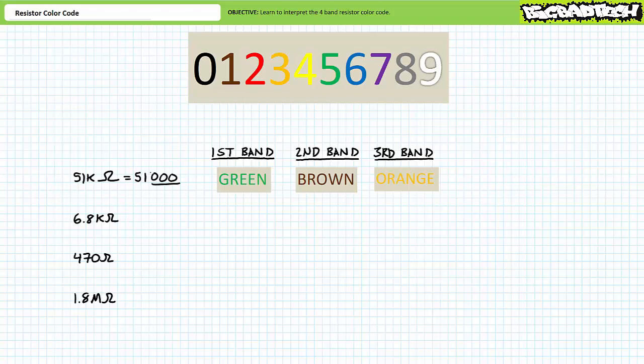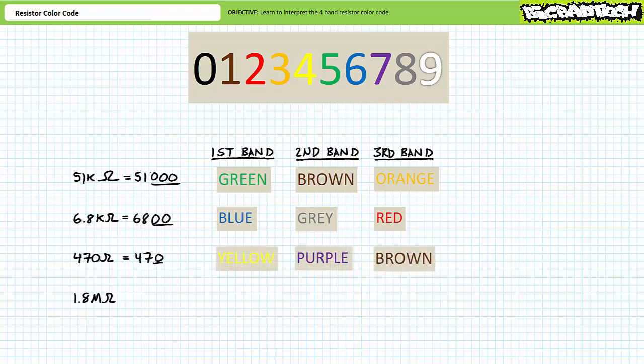51 kilohms can be written as 5,1, with three zeros. 5 is green. 1 is brown. And 3 is orange. 6.8 kilohms can be written as 6,8, with two zeros. 6 is blue, 8 is gray, and 2 is red. 470 ohms can be written as 4,7, with one zero. 4 is yellow, 7 is purple, and 1 is brown. Finally, 1.8 megaohms can be written as 1,8, with five zeros. 1 is brown, 8 is gray, and 5 is green. That wasn't too hard, was it?